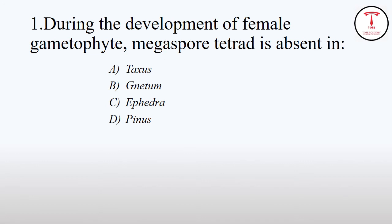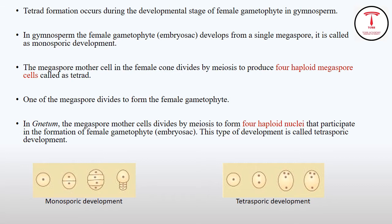We'll discuss some questions from the last January botany SET exam paper. During development of female gametophyte, megaspore tetrad is absent in A) Taxus, B) Gnetum, C) Ephedra, and D) Pinus. In gymnosperms, female gametophyte or embryo sac development doesn't have tetrad formation occurring.